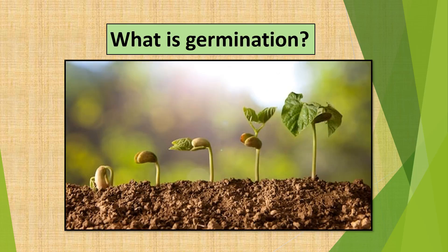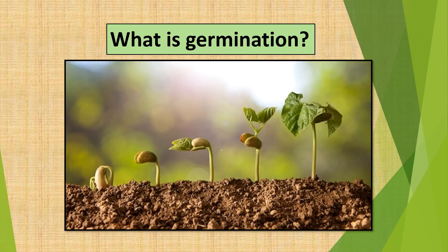Let us now understand what is germination. The growth of a seed into a young plant or a seedling is called germination. In order for a seed to germinate and grow into a new plant, it needs: water, which helps the seed to swell up so the embryo can start growing; warmth, which speeds up and improves the process of germination; and air or oxygen, which releases energy for the embryo to germinate.